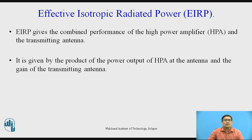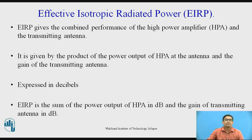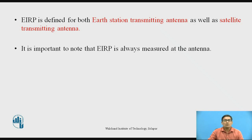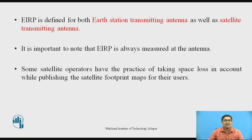EIRP is the product of the HPA output power at the antenna and the gain of the transmitting antenna. The EIRP is expressed in decibels. When measured in dB, it is the sum of the power output of the HPA and the gain of the transmitting antenna in dB. EIRP is defined for both the Earth Station transmitting antenna as well as the satellite transmitting antenna. It is important to note that EIRP is always measured at the antenna. Some satellite operators take space loss into account when publishing satellite footprint maps. Footprint means the satellite's coverage range.